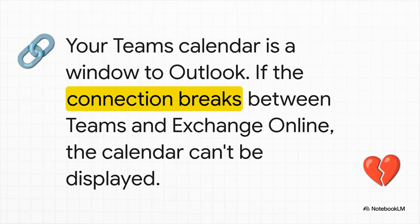Next up, we've got sync failures. The best way to think about your Teams calendar is that it's just a window looking into your Outlook calendar. But if that connection — that link between Teams, Outlook, and your Microsoft 365 account — gets weak or breaks, well, that window suddenly becomes a brick wall. The calendar data is still there; Teams just can't see it anymore.